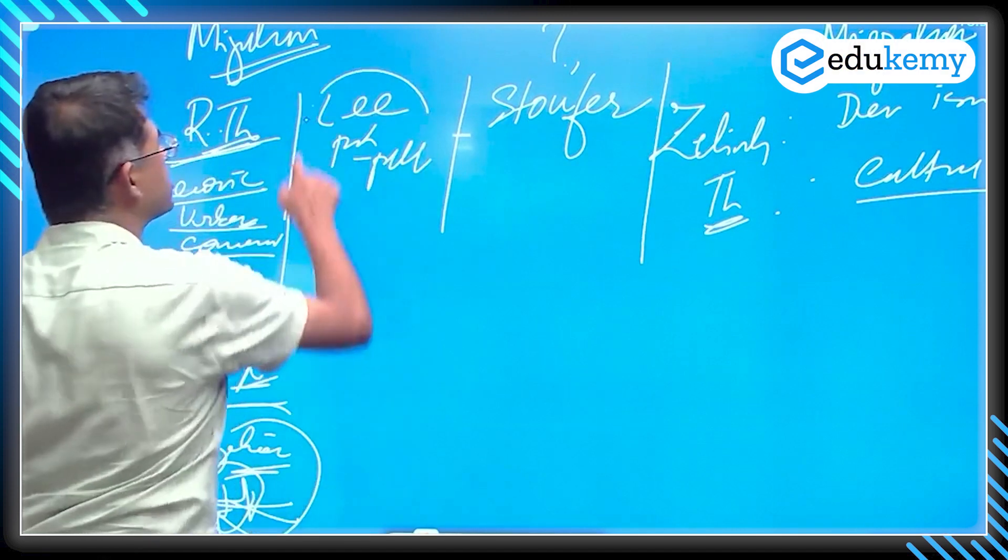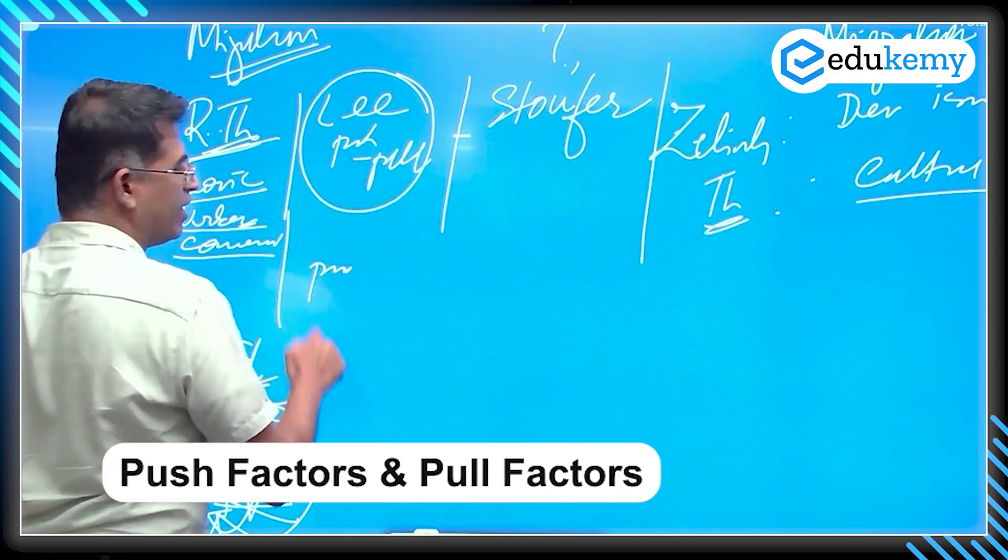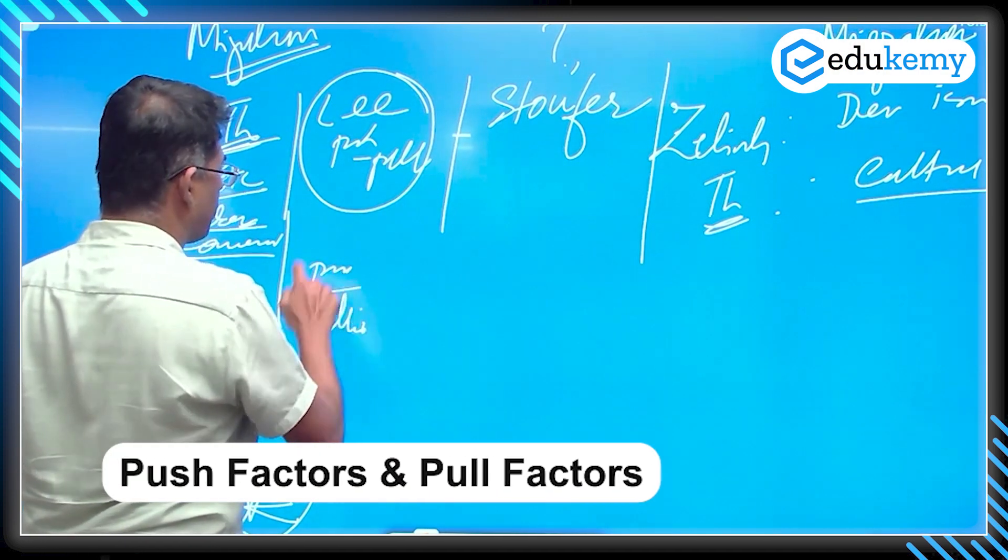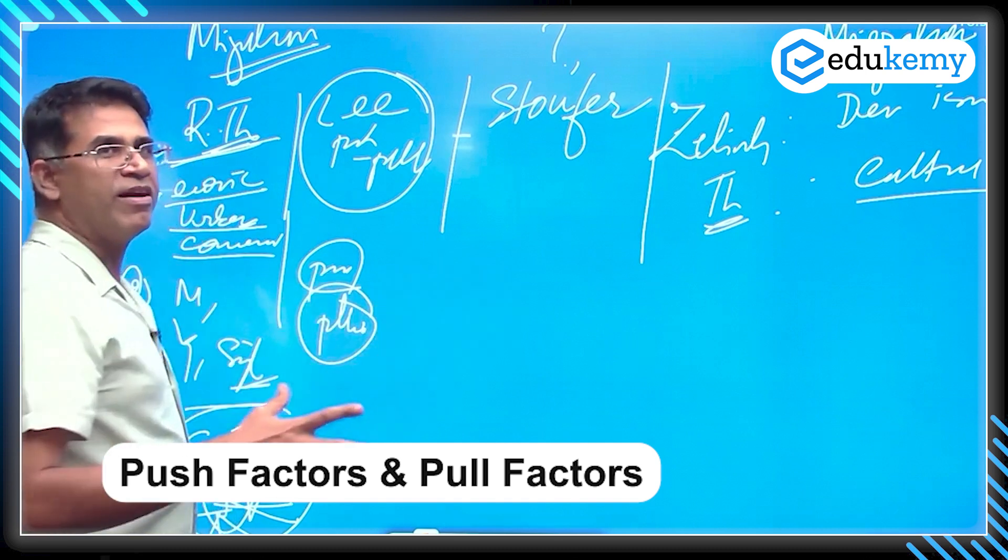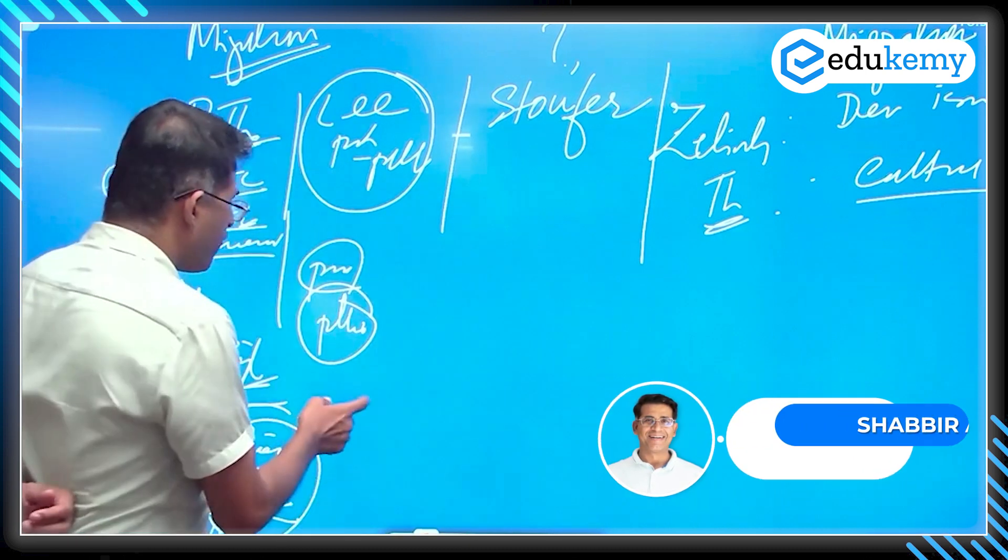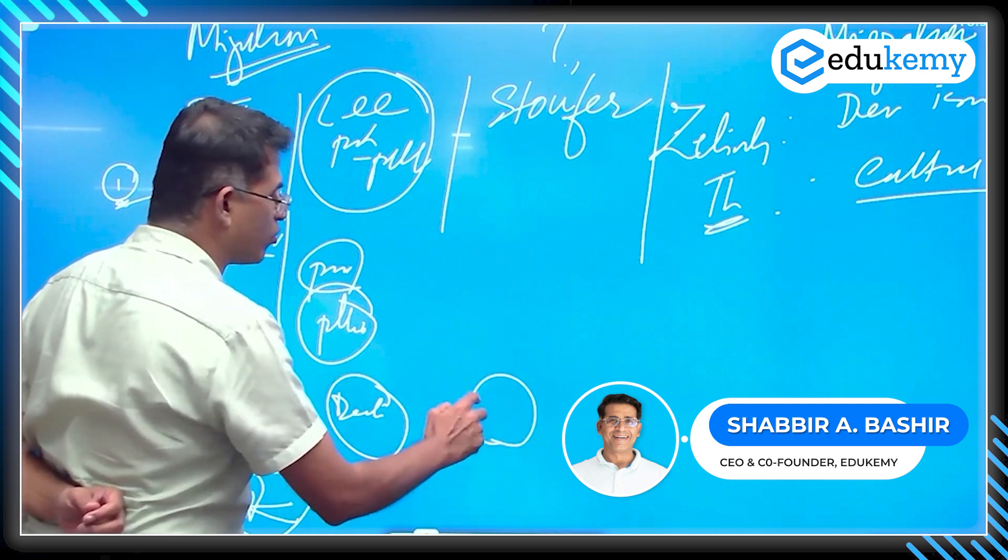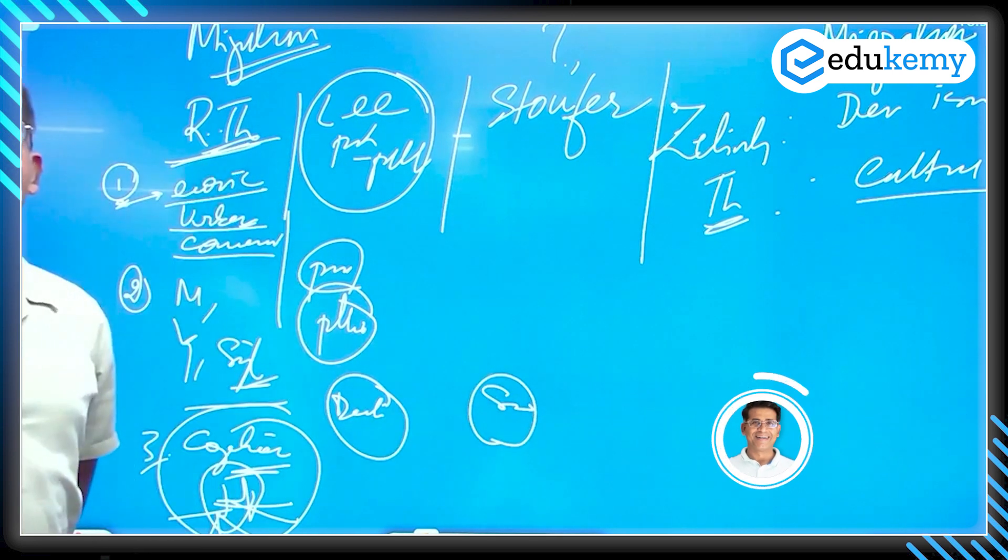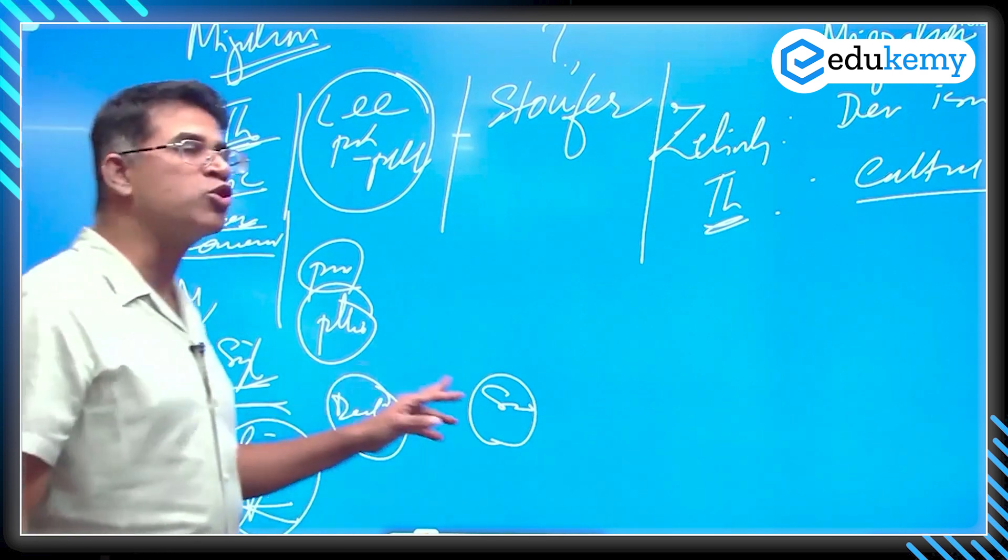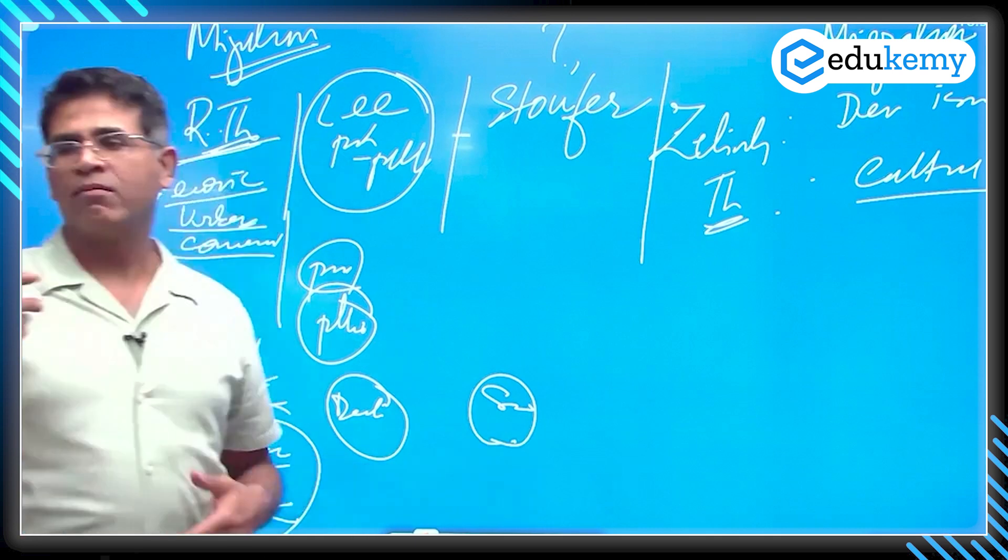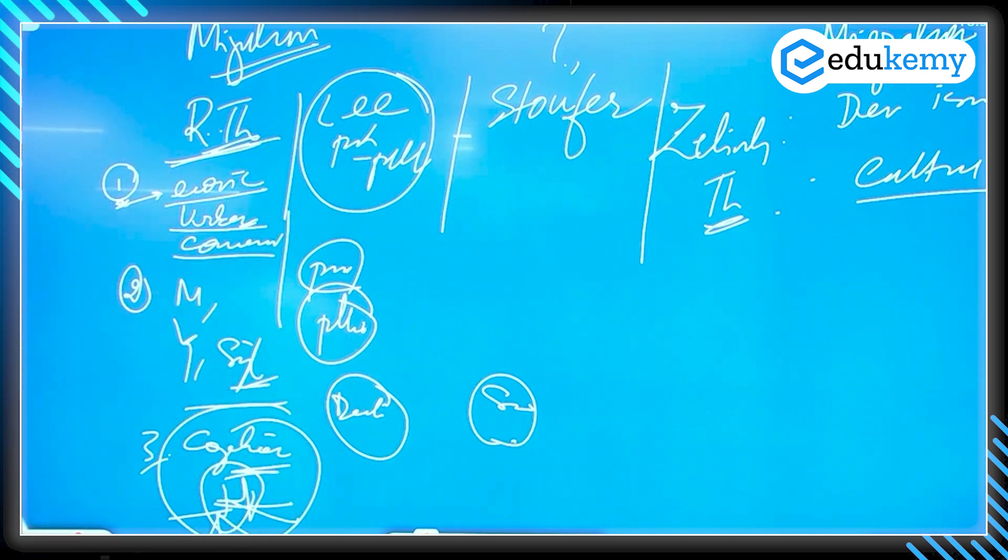If you know about Lee's theory, there is a push factor and there is a pull factor. The push-pull factors together will decide the migration. We have factors related to destinations and factors related to the source regions. The factors which operate on the source regions.